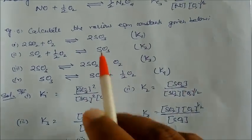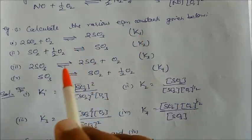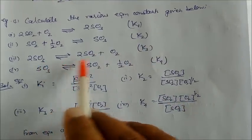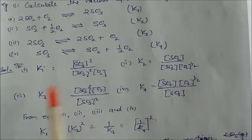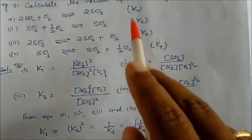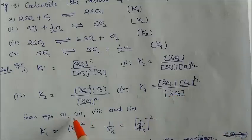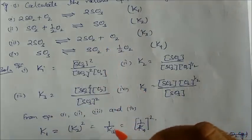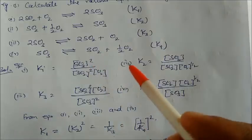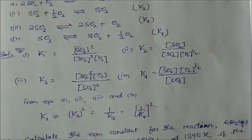Let us look at an example: calculate various equilibrium constants given reactions with constants K1, K2, K3, and K4. Writing out Kc expressions for each reaction, we find K1 equals K2 squared (from dividing), K3 involves the inverse for the reverse reaction (1/K3), and K4 also gives 1/K4 squared. From equations one through four, K1 equals K2 squared equals 1/K3 equals 1/K4 squared.